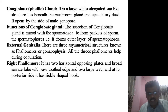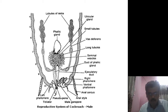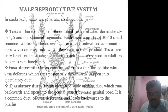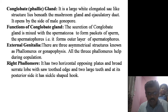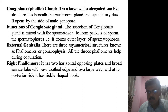The other gland which lies behind the mushroom gland is called the conglomerate gland, or it is also called the phallic gland. This phallic gland is a large white elongated sac-like structure that lies beneath the mushroom gland and the ejaculatory duct. It opens by the side of the male gonopore.